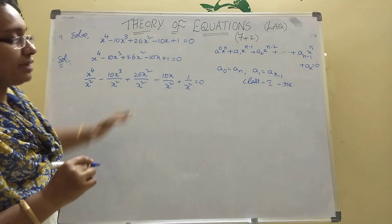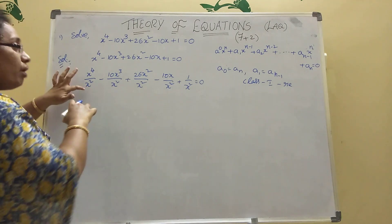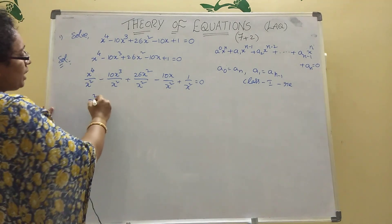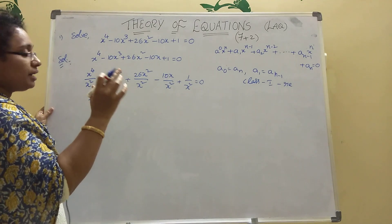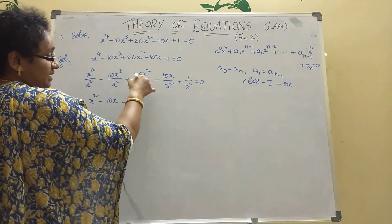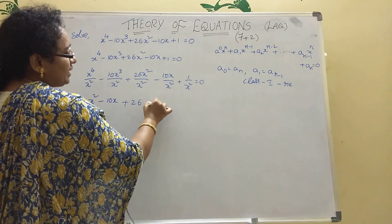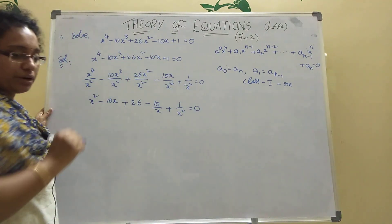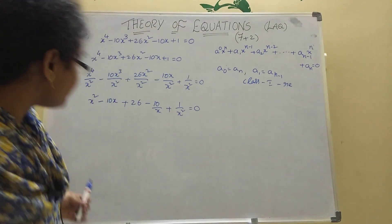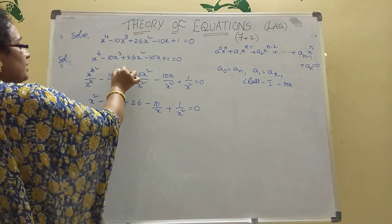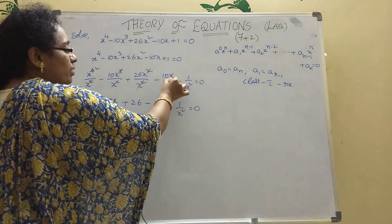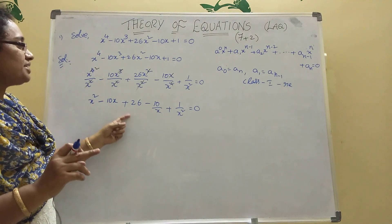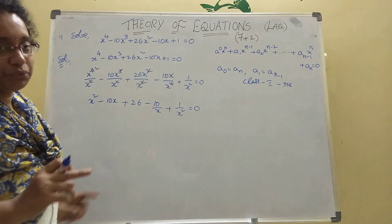Continuing the division: minus 10x by x square plus 1 by x square equal to 0. After canceling: x power 4 by x square gives x square; minus 10x cube by x square gives minus 10x; plus 26; minus 10 by x; plus 1 by x square equal to 0. So our expression is: x square minus 10x plus 26 minus 10 by x plus 1 by x square equal to 0.